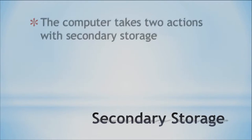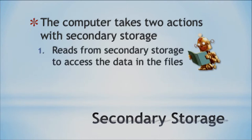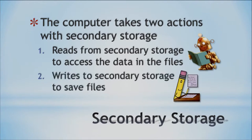There are two actions the computer takes with secondary storage: it reads — it accesses the data in those files — and it writes to the secondary storage, meaning it saves things. So when you do a save, that's what's going on. If you write into a file and don't save it, it's still in the RAM but not in the secondary storage. When you press save, it writes to secondary storage.